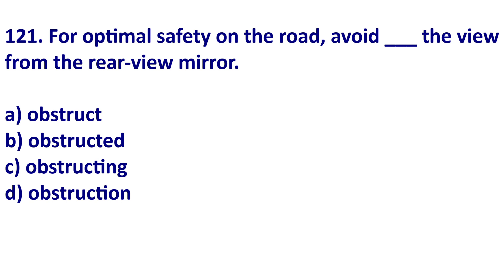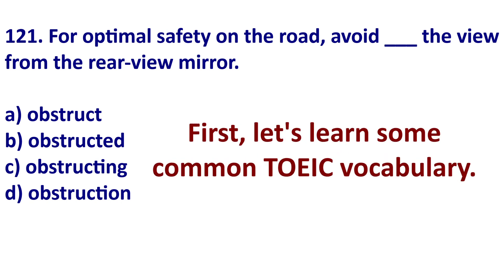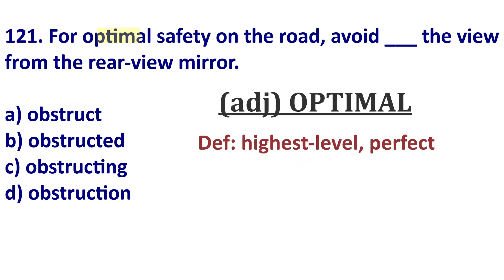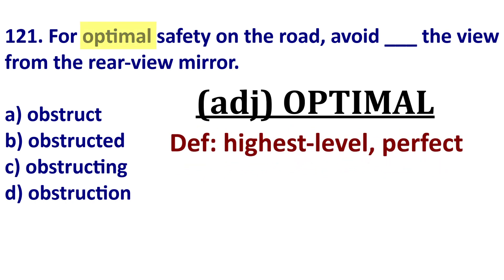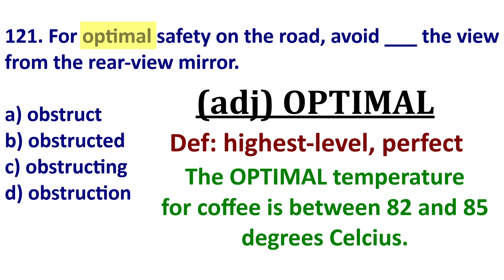Here's the first question. We're going to look at two key vocabulary words. The first is 'optimal,' as in 'for optimal safety.' Optimal is an adjective that means perfect or the highest level. For example, the optimal temperature for coffee is between 82 to 85 degrees Celsius.